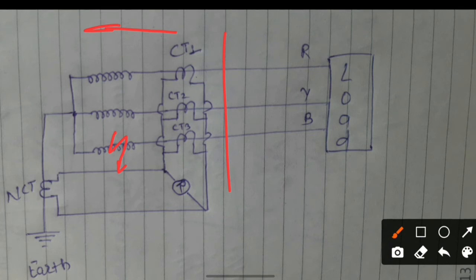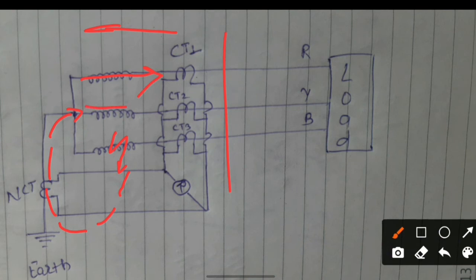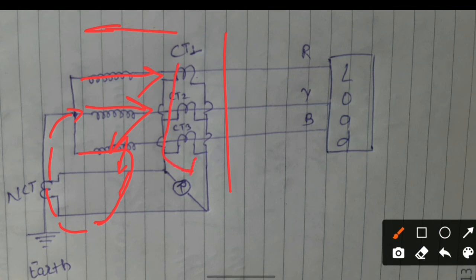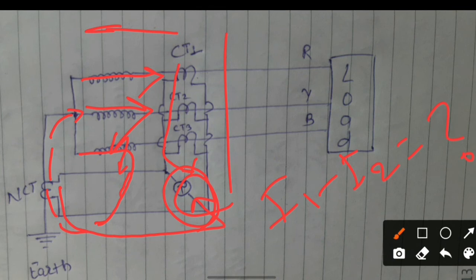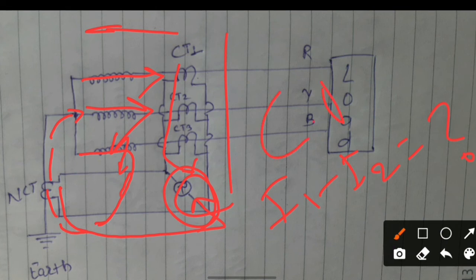If the fault occurred inside the protection zone — let's say on the B phase — the fault current flows through the winding. There is some current in CT1 on the R phase and some current in the Y phase, but there is no current in the B phase CT, so unbalanced current flows. This current flows one way, and the NCT senses the fault current flowing the other way. At this time I1 minus I2 equals something non-zero. The relay will operate on an internal fault, sending a command from the CT to the circuit breaker, and the CB will isolate the transformer from the generator.